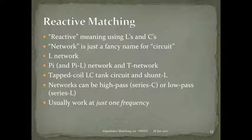T-networks look like a T — two series components and one shunt or parallel component in the middle. Another approach is a tapped-coil LC tank circuit. For antennas with very high feed-point impedance — like a half-wave vertical or bobtail beam — you make a resonant circuit with a parallel L and C, set it to resonance, then move your feed point along the coil until you find the 50-ohm point.